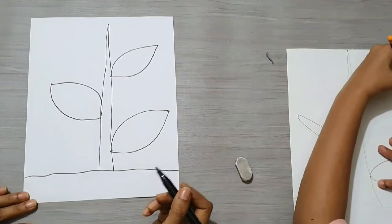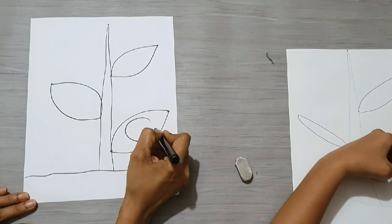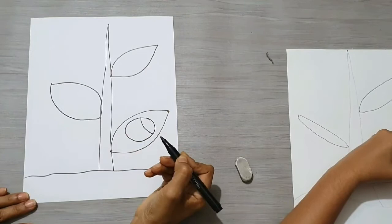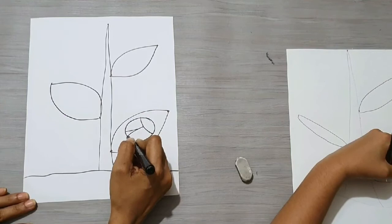Next, a ladybug. Start with an oval. Draw the head. And then the wings.